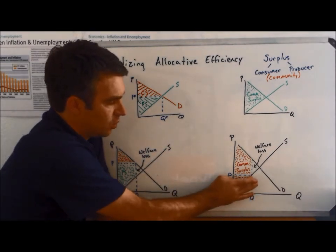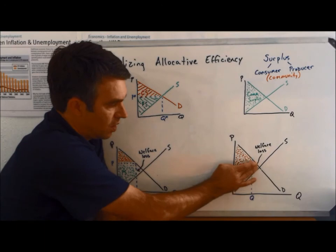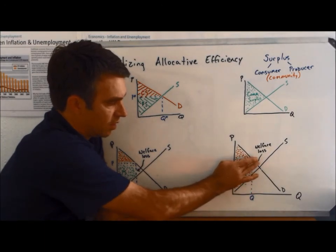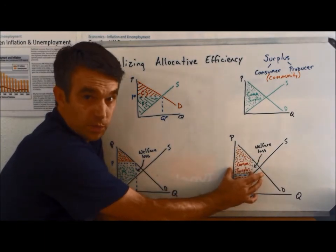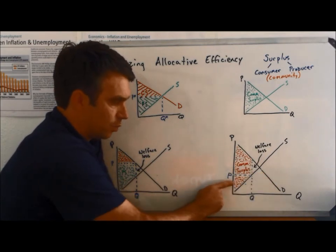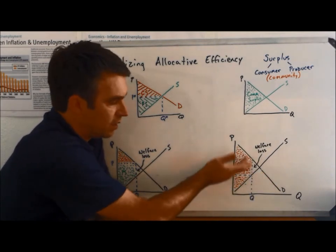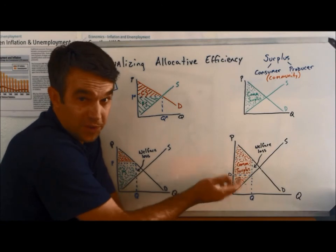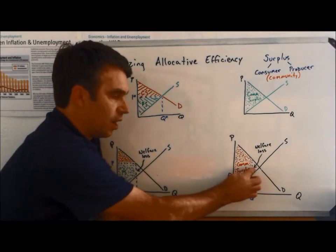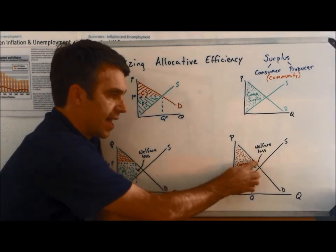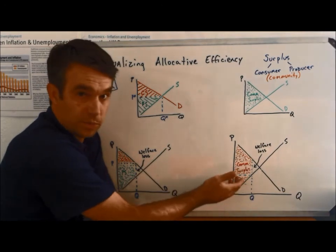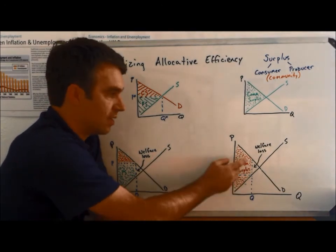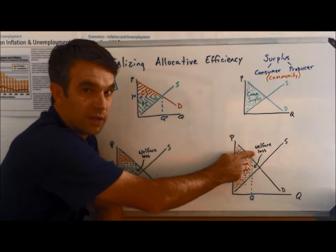So at Q, we have to go from Q up to the demand curve. And yeah, this first, this top bit would be consumer surplus, and the bottom would be producer surplus. But looking at it from a community standpoint, we don't really care about that. All we're going to point out is that community surplus has not been maximized. That is, we do see a certain amount of welfare loss.